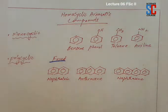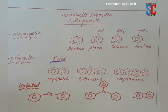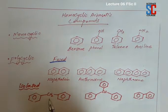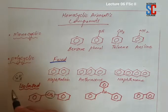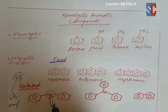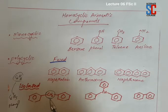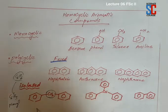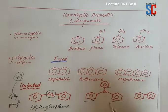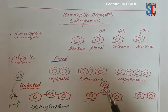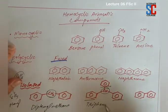There is another possibility when rings are isolated. When two benzene rings are isolated with methane — actually this is methane — methane ki ek hydrogen hatakar phenyl group laga dein. This is called phenyl group. Benzene is C6H6; if we remove one hydrogen from benzene we get C6H5, which is called phenyl. Ye do phenyl groups lagge methane ke saath — methane tha CH4 — ek hydrogen hatakar phenyl, doosri hydrogen hatakar phenyl. This is known as diphenylmethane.